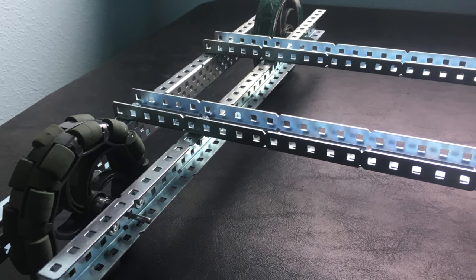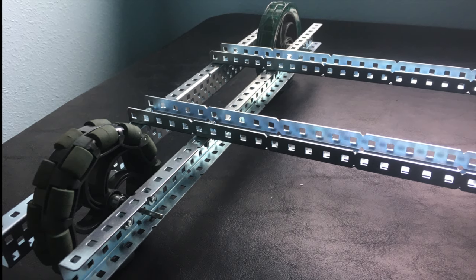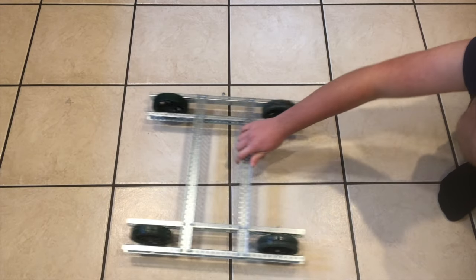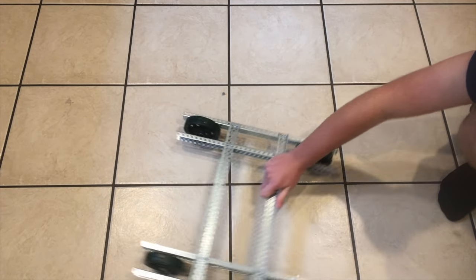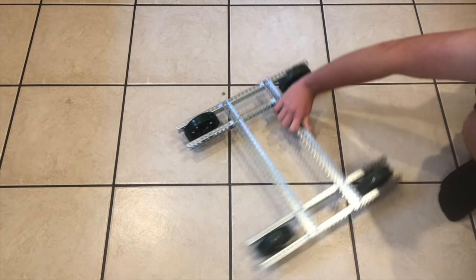One other tank drive configuration is the hybrid setup. This setup involves swapping one pair of Omni wheels for normal wheels, therefore getting the decreased strain on the motors because one set can slide effortlessly across the floor, and you are much more protected against pushing compared to the full Omni wheel setup.